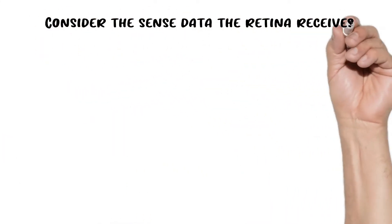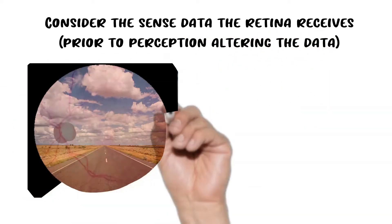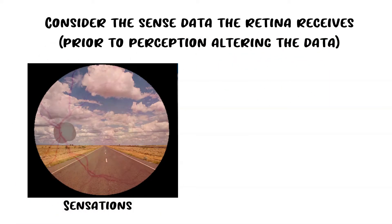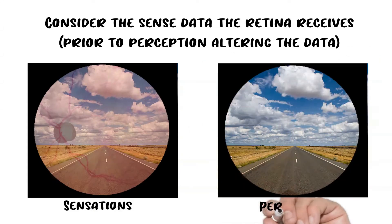I want you to consider for a second the sense data that the retina receives before perception takes place. There would be blood vessels, a big blind spot where the optic nerve leaves for the brain, crazy distortion of light and dark pixels, and everything would be two-dimensional. But because of perception, we get this really nice, easy, pretty picture in our brain. Just consider all the things that our brain has to process.